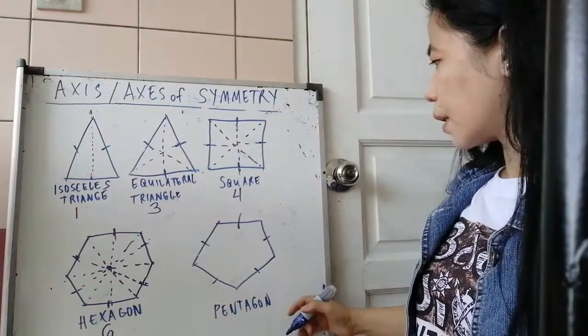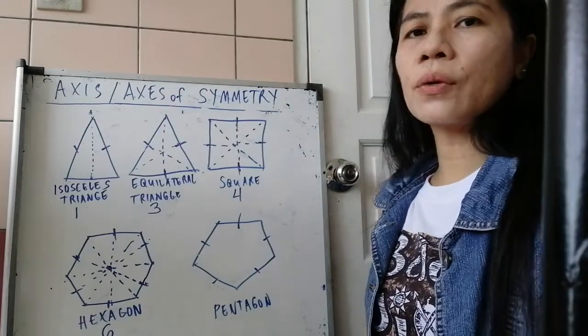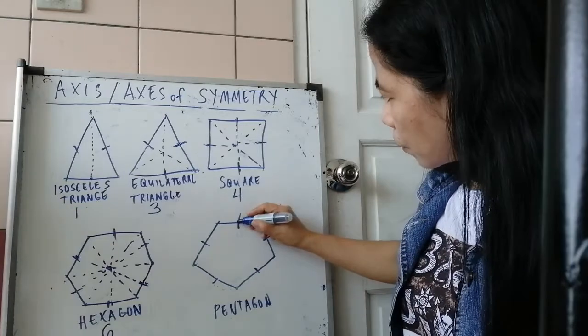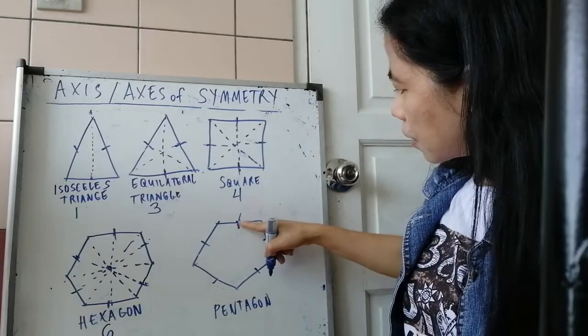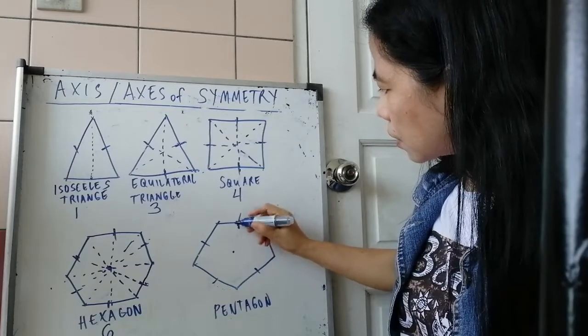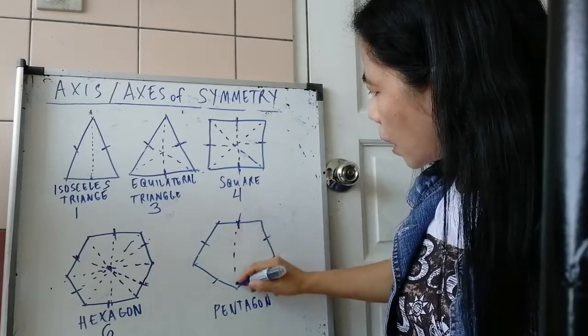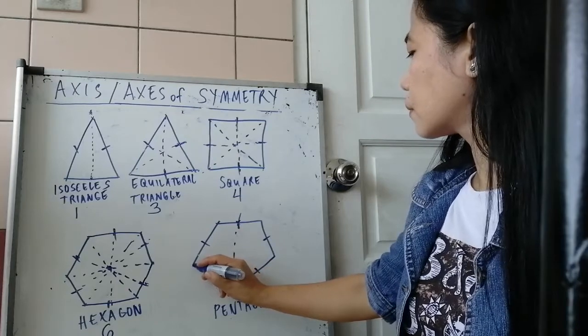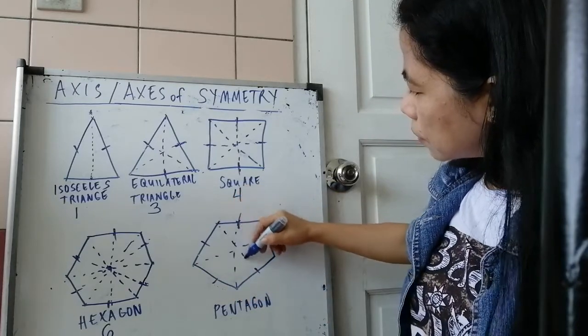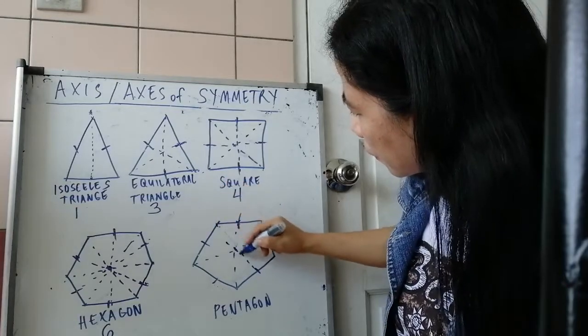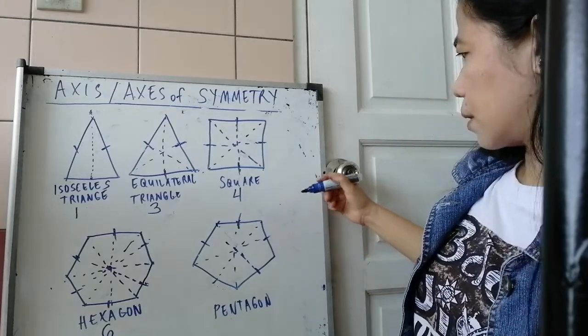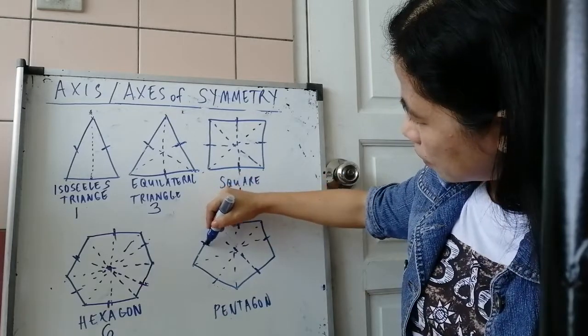Okay, then for the pentagon, it has five equal sides, so it must have five lines of symmetry. So from this side to the apex, it must also pass through the center. So the center is one, two, three, and then four, and then the five is over here.